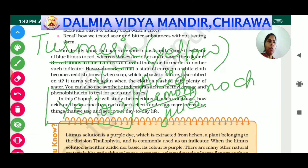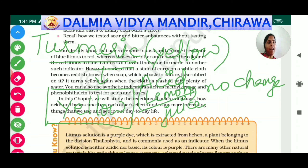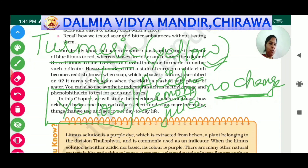The yellow color does not change when an acid is added, meaning turmeric shows no change in the yellow color in an acidic medium. This indicates the substance added is acidic or neutral in nature.